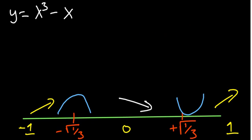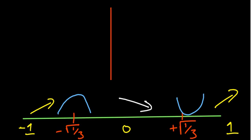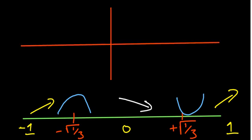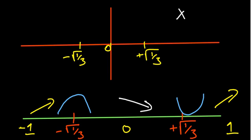Let's now draw the sketch on the xy-plane. The point of inflection is at x equals zero. The turning points are at negative root of one over three and positive root of one over three. Substituting the point of inflection x equals zero into the equation y equals x cubed minus x gives y equals zero, so the point of inflection is at the origin, (0, 0).